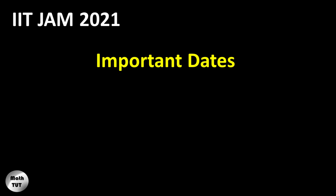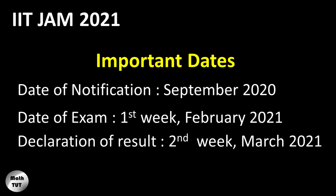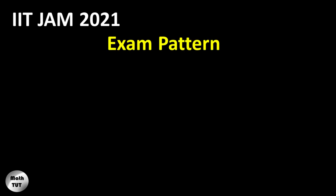The application for IIT JAM is usually called for in the month of September, so this year also you can expect the notification for the examination to come up in the first week of September. The exams will usually be conducted in the first week of February, and the results will be out in March.